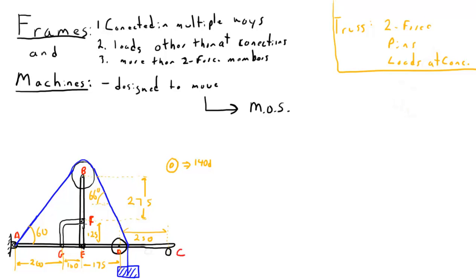You will also note that even though this member GF is bent, the only place loads can be applied to it is at point G and point F. And therefore, you can actually assume that GF is a two force member. These wheels we'll deal with in a second. We can also think of these as pulleys. But again, we have a load being applied way over here.